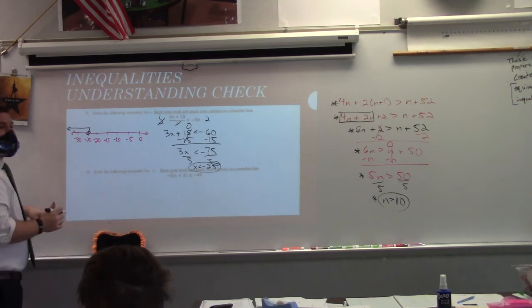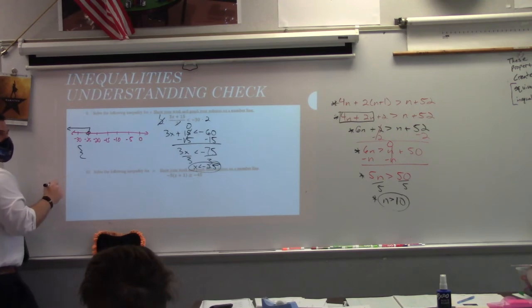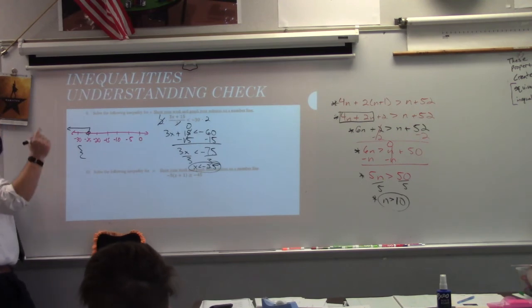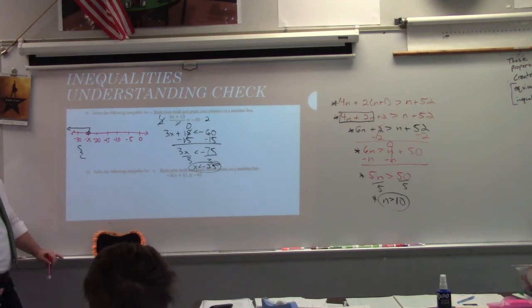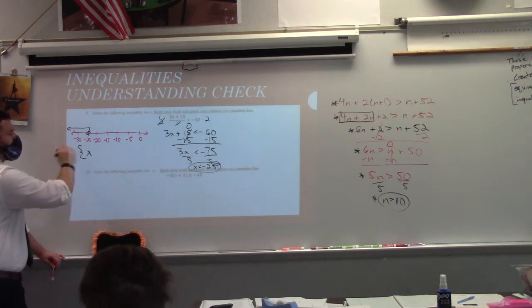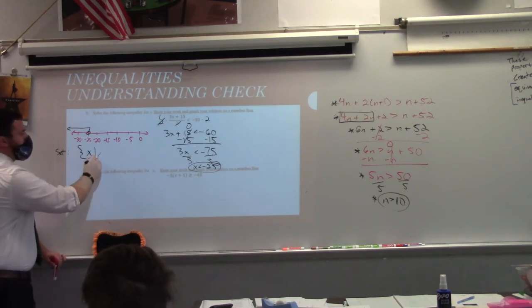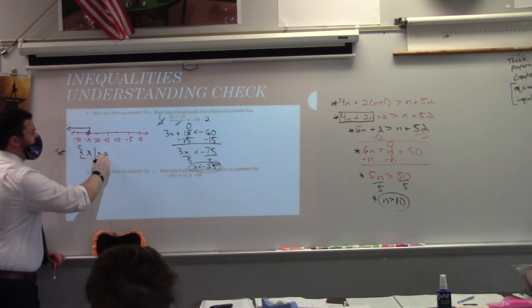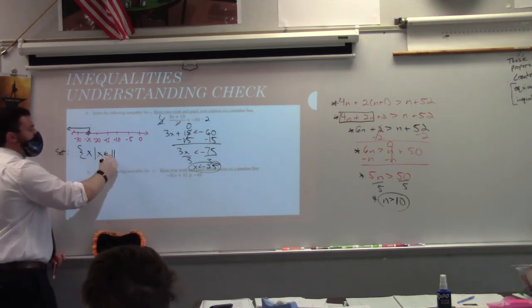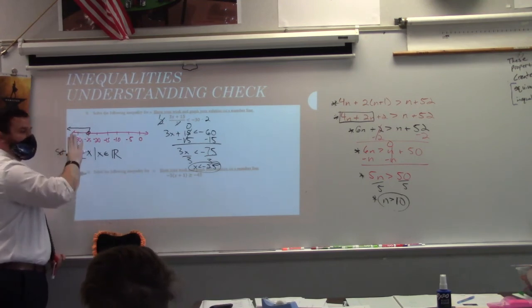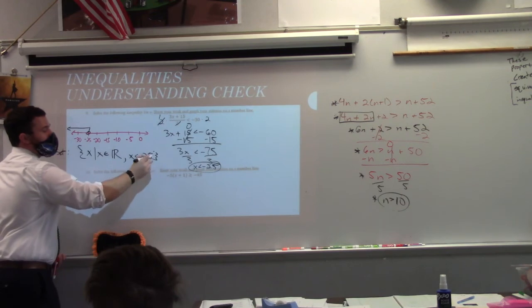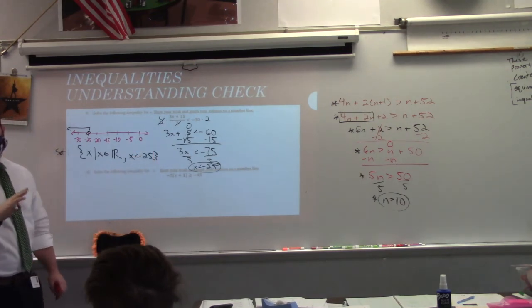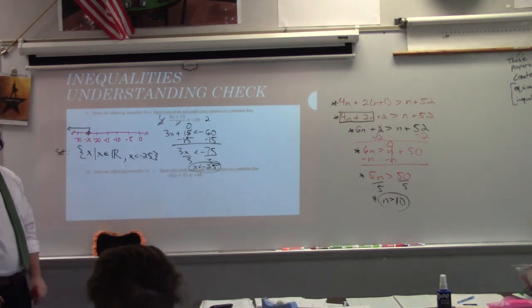For set notation on this one: start with curly brackets, then X, then the vertical line for 'when,' then 'X is an element of the real numbers.' We're including all decimals, all fractions, all the everything — but is it all real numbers? No. So we put the inequality: x is less than negative 25. Whatever inequality is here, that's where it goes in the set notation. For interval notation on number 10 where x is less than or equal to 8: minimum value going left is negative infinity with a parenthesis, maximum value is 8 with a bracket because you can equal 8.